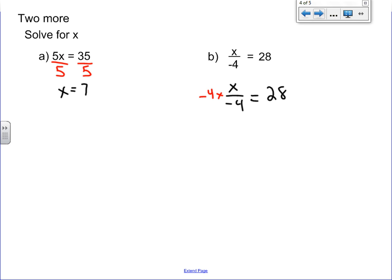Now our 4s cancel out. We just get x equals 28 times 4, which is going to be 112. Positive and negative makes negative 112.